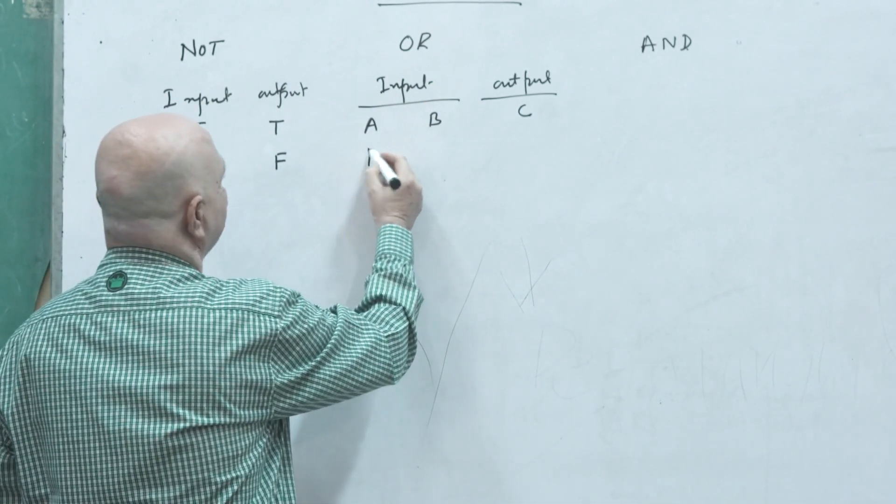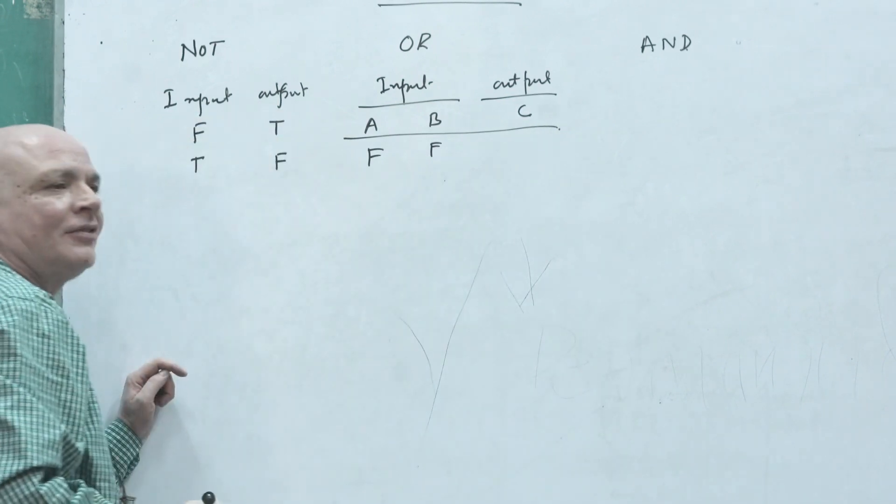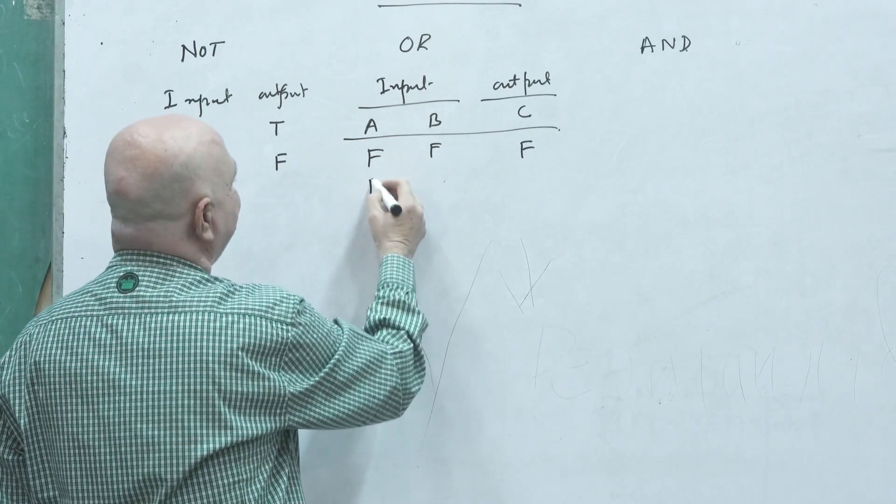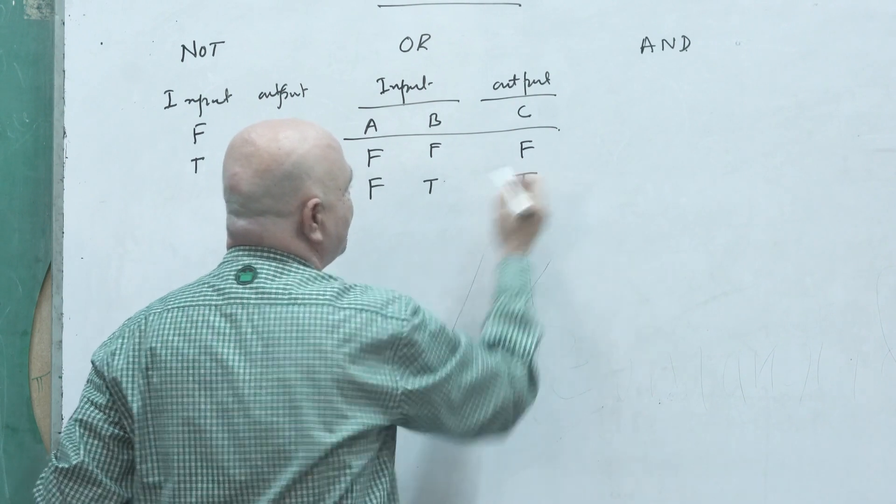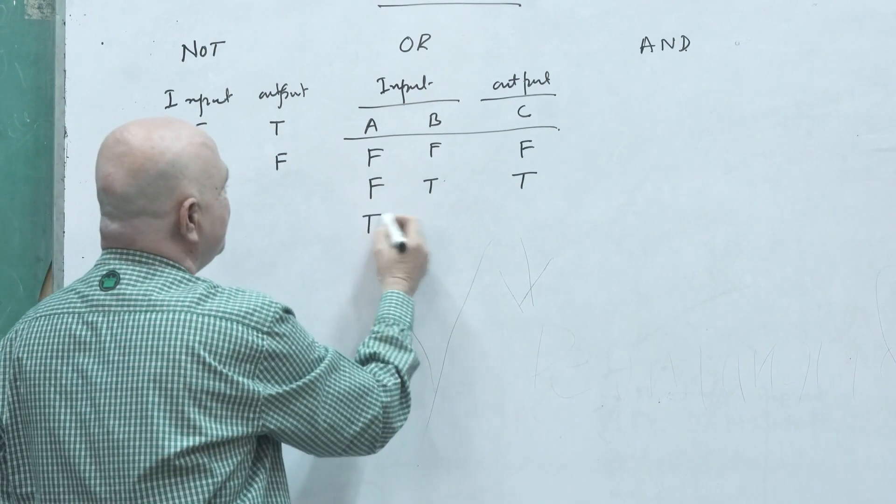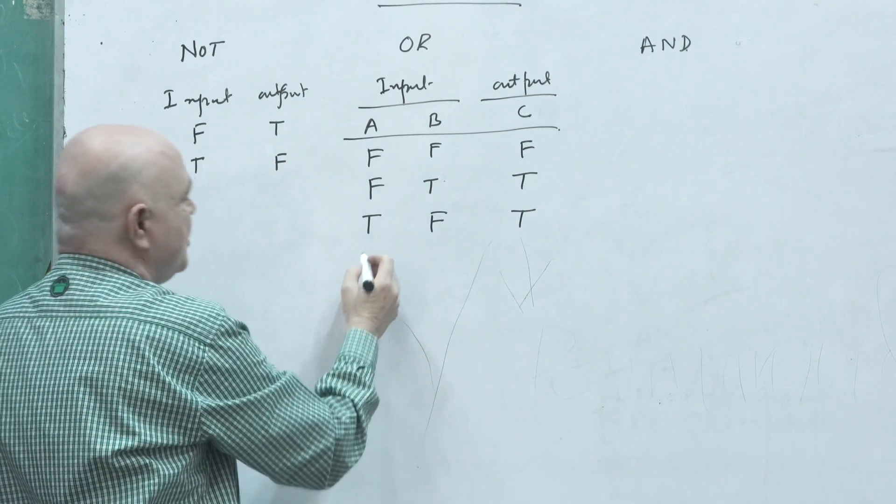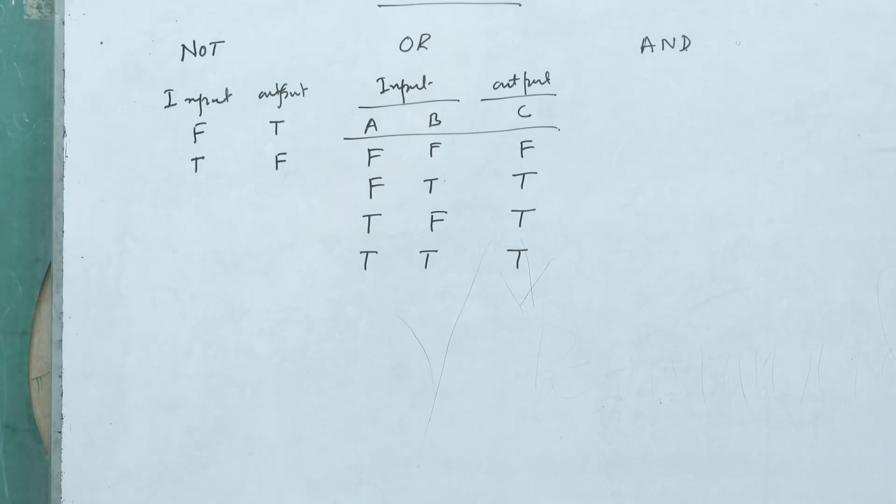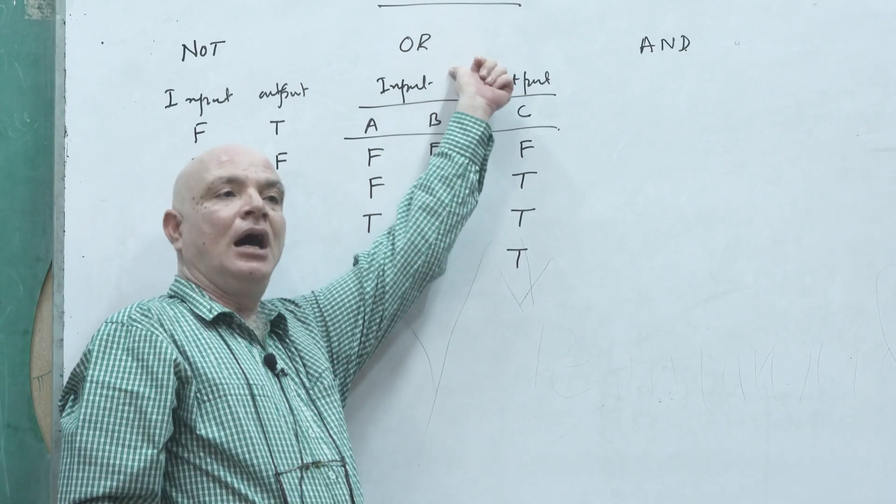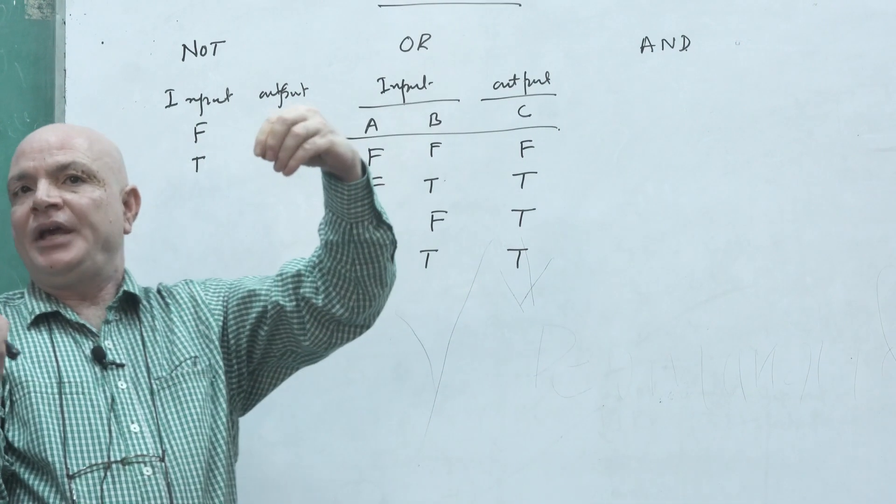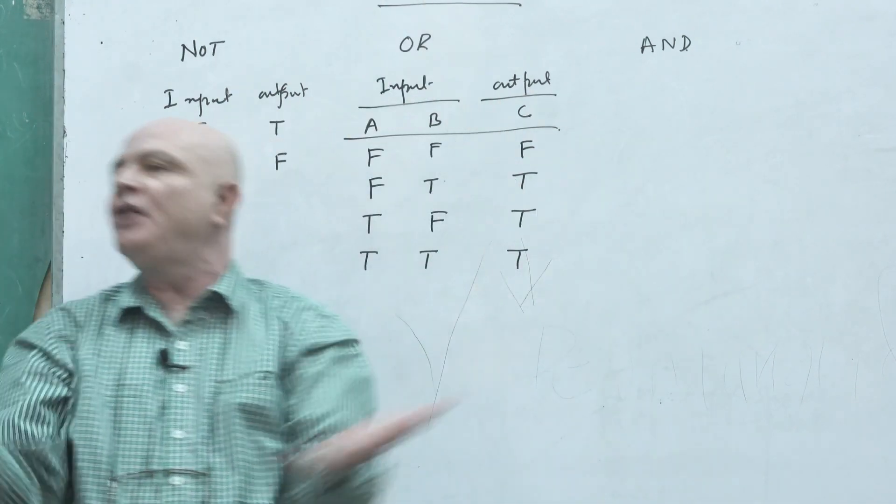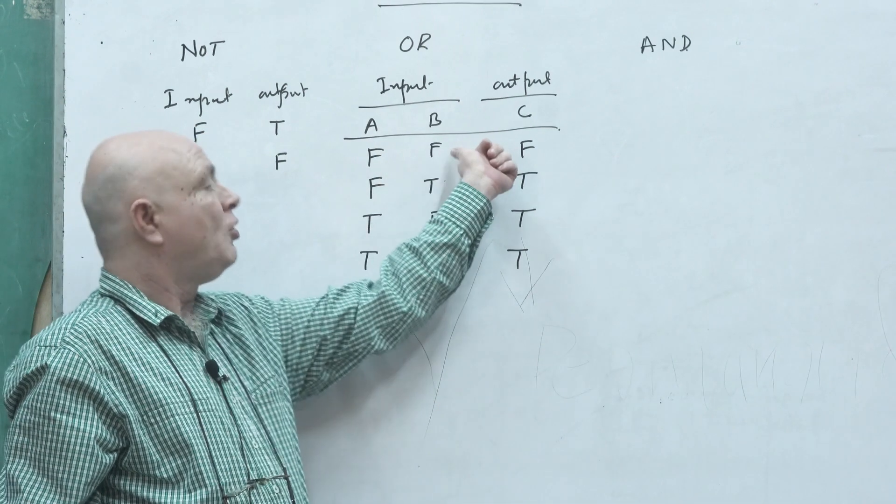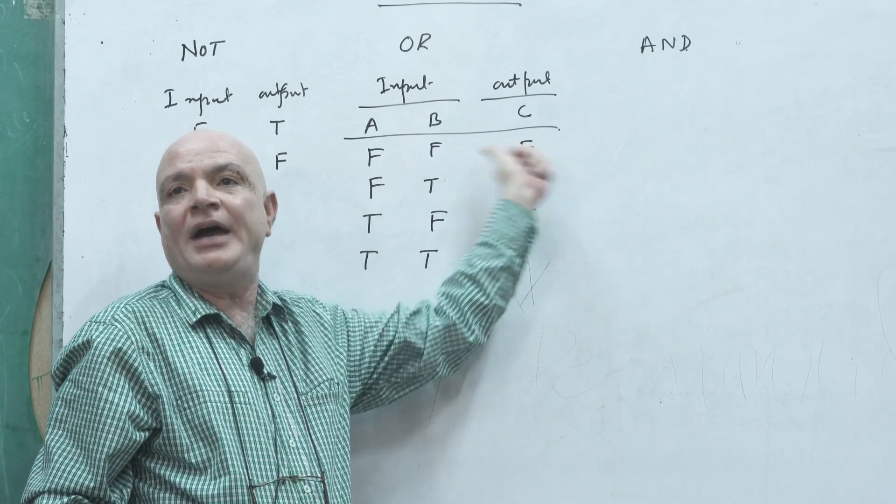So say if both are false, if both are false the conclusion will be false. If this is false, the conclusion or output must be true. If this is true, this is false, again it will be true. If both are true then this will be true. So you can conclude from here that in OR when you are joining, anyone is true, the whole becomes true.